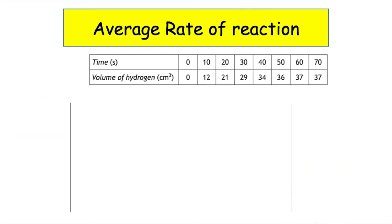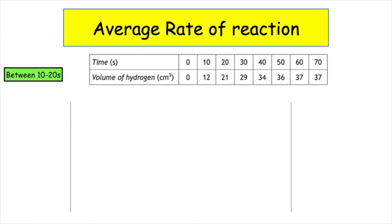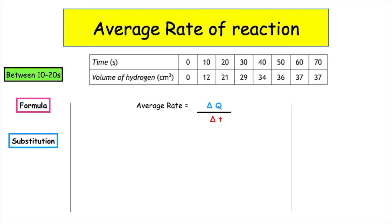Let's have a go at calculating the average rate of reaction between 10 and 20 seconds. The first thing that we write down is our formula, which is average rate is equal to change in quantity over change in time. We then do the correct substitution. We look at our time interval, which is 10 and 20, and we always write the big number first: 20 minus 10. We then look at the quantity given for that time interval. We write the big number first: 21 minus 12. This gives us one mark for correct substitution.